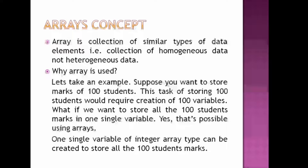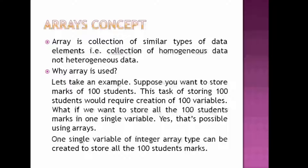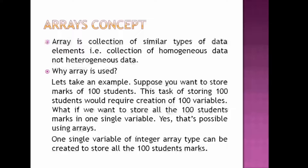The first problem is: suppose arrays are not there. Then I'll have to create 100 variables for storing 100 student marks. But instead of that, what I want is to create only one single variable, and all 100 student marks should be stored in that one variable. So for that purpose, I can use an array — I can create an array of size 100 elements and store all 100 students' marks in it. The marks are similar type data elements, so if you create an array of integer type, all data must be integer; if float type, all data must be float. That's why the definition says array is a collection of homogeneous data, not heterogeneous. Please remember this.